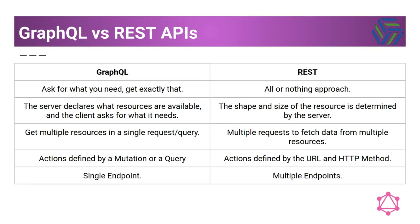In GraphQL the server declares what resources are available and the client asks for what it needs. In REST, the shape and size of the resource is defined by the server. In GraphQL we are able to get multiple resources in a single request using a query, while in REST we need to make multiple requests to fetch data from multiple resources. In GraphQL actions are defined by a mutation or a query, while in REST actions are defined by the URL and the HTTP method. In GraphQL you only have one endpoint, while in REST you have multiple endpoints.